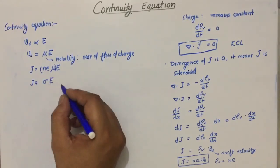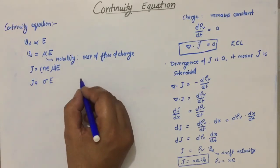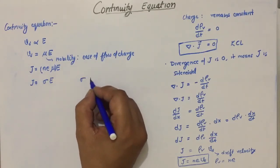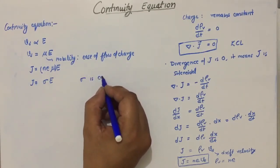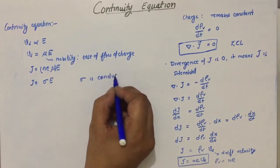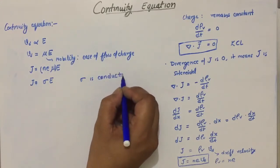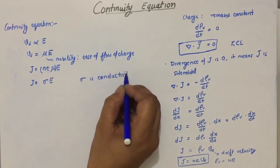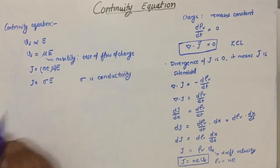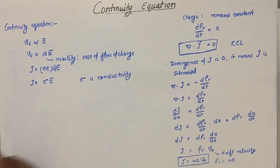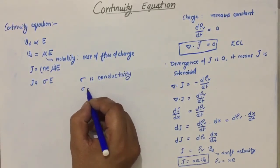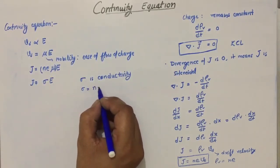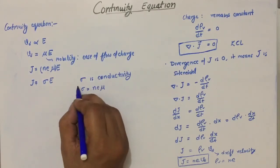Replacing J accordingly, we get J equals n·e·mobility·E. This term n·e·mobility is further defined as conductivity σ. So we have J equals σE, and conductivity σ equals n·e·μ.